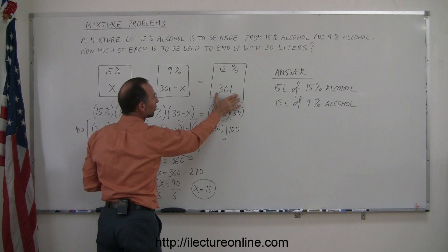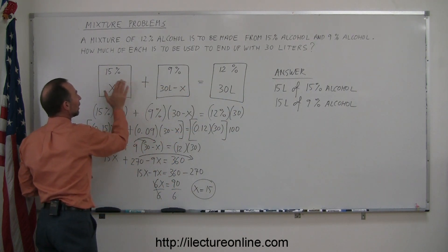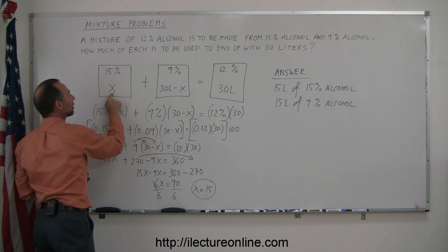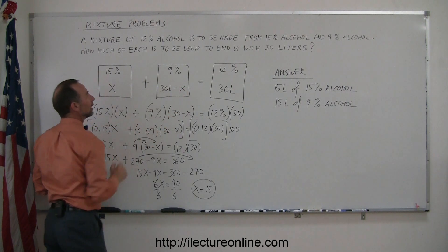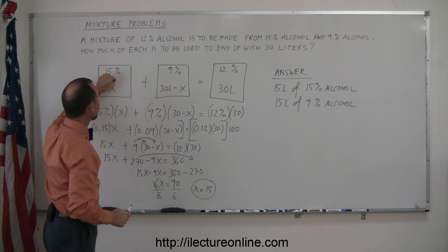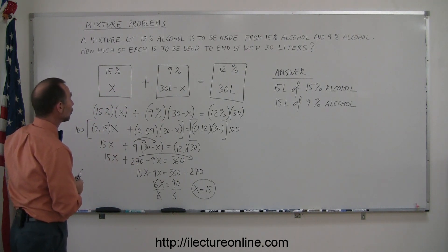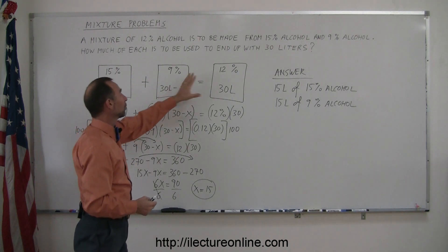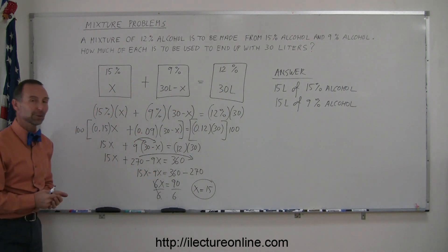You know that you're supposed to get 30 liters of that solution, made up from however much you put in here. Let this be the unknown, X liters of this solution, and the total 30 liters minus X of that solution. And then you multiply these two together. The multiplication of each of those represents the amount of alcohol you have in each of your solutions, and those two should add up to the total amount of alcohol you have in your final solution. And that's how you do the problem.